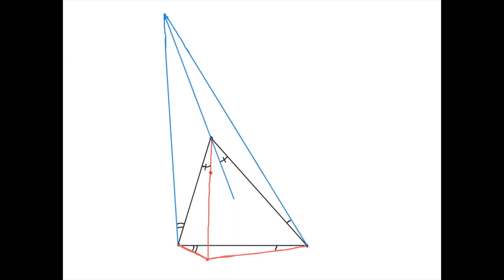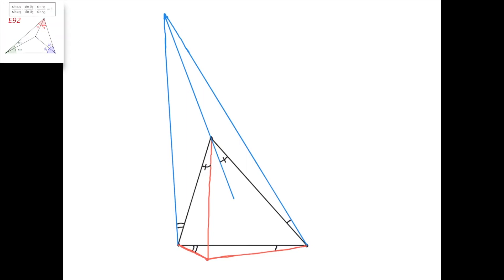The same applies for the other pairs of lines: this line and this line are isogonal conjugates with respect to this angle, so this angle equals this angle; and similarly for the third vertex. The proof that the isogonal conjugate exists for an external point is the same as for an internal point — you apply the sine form of Ceva's theorem for each of the two points.